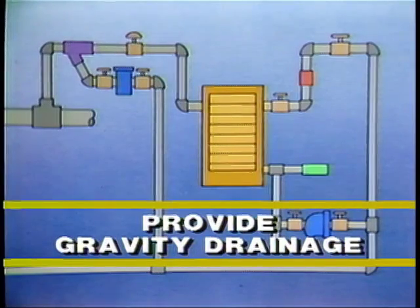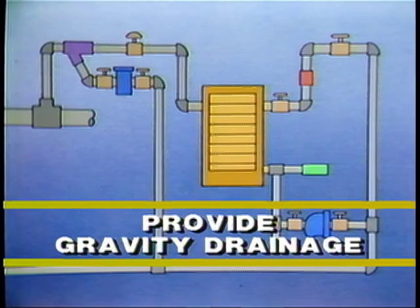The installation and proper maintenance of a vacuum breaker is the first step in preventing coil flooding. For modulating systems, Armstrong recommends an F&T trap with an integral vacuum breaker to simplify piping. With the outlet of the trap connected to a gravity return system, you can expect years of trouble-free service if proper maintenance procedures are followed.